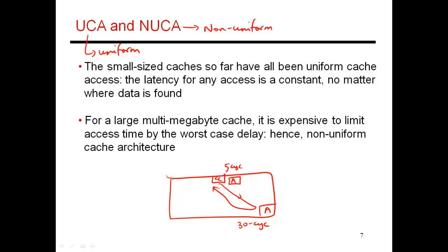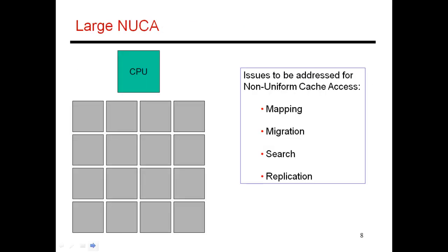This obviously comes more into play when you have a really large L2 or L3 cache. It's not a worthwhile feature to include if you're dealing with small caches that can anyway be accessed within a handful of cycles. Here's one example where you have a CPU and a large L2 cache broken up into 16 different banks. Getting data from a nearby bank is maybe a five-cycle access, whereas traversing the network to a distant bank is maybe a 30-cycle access.